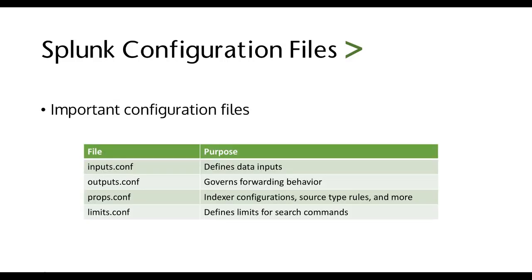There are four main configuration files, and some apps have additional ones. inputs.conf defines data inputs. outputs.conf defines forwarding behavior. props.conf defines indexing, property configurations, custom source type rules, and much more — props.conf is a very important configuration file. And limits.conf defines various limits for search commands. Going into a deep dive of configuration files is beyond the scope of this class, but I would recommend going to docs.splunk.com first of all. I thank you for joining me in this segment, and I'll see you next time.